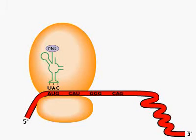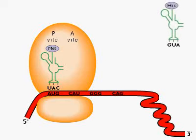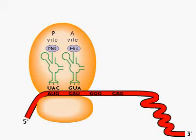The initiator tRNA is placed at the p-site of the ribosome. The next aminoacyl tRNA enters the ribosome at the A-site.